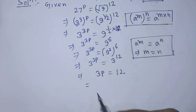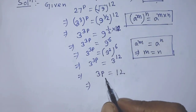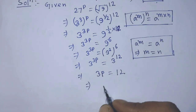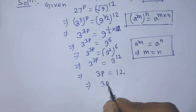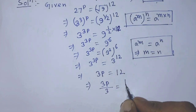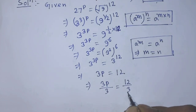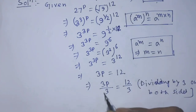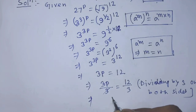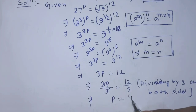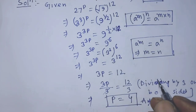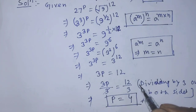Now we divide both the left hand side and right hand side by 3, giving us 3p over 3 is equal to 12 over 3, which simplifies to p is equal to 4. This is our final answer.